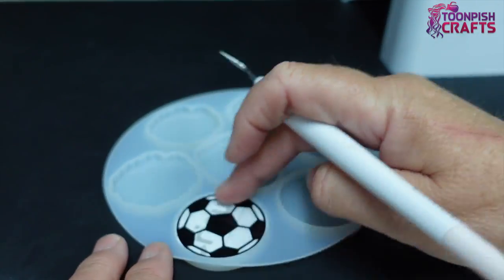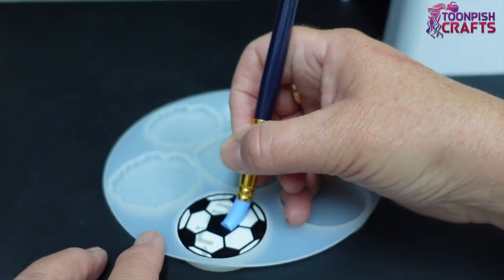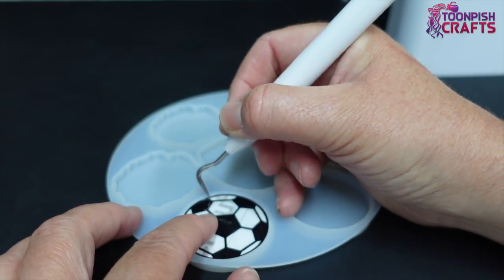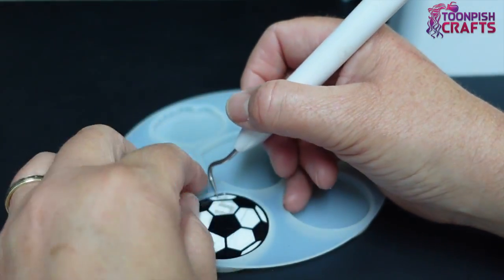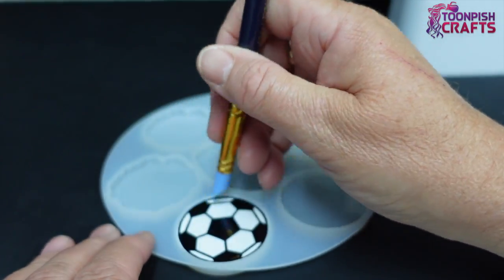Once I got it in the right place, I used the silicon tool to push it down to make sure it was flat. Then I removed the transfer film and it looked amazing. It was just black, that's all it was - black on a white background. Stunning.